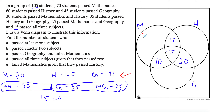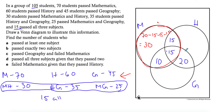Now move to the outer regions — you subtract three numbers here, not just one. For maths: 70 minus 15 minus 15 minus 10 equals 30. So 30 people passed only maths. For history: 60 minus 15 minus 15 minus 20 equals 10. For geography: 45 minus 10 minus 15 minus 20 equals 0. So zero people passed only geography. That's unusual, so it's worth double-checking your numbers.